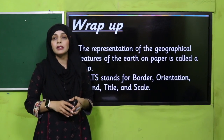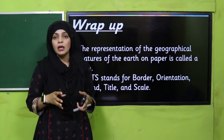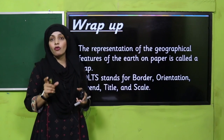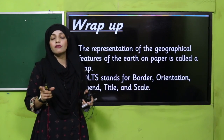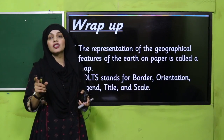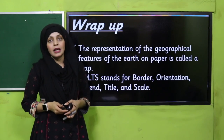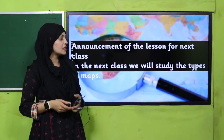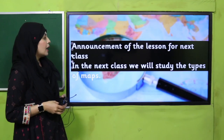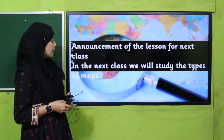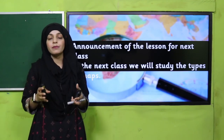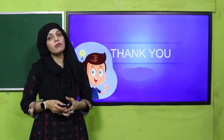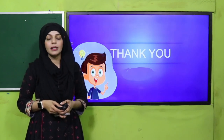My dear students, today we have learned that the five key essential elements we must know to read a map are BOLTS — an acronym which stands for border, orientation, legend, title, and scale. In the next lecture, we will study the types of maps. Until then, keep everybody around you safe, have a good day, thank you so much.